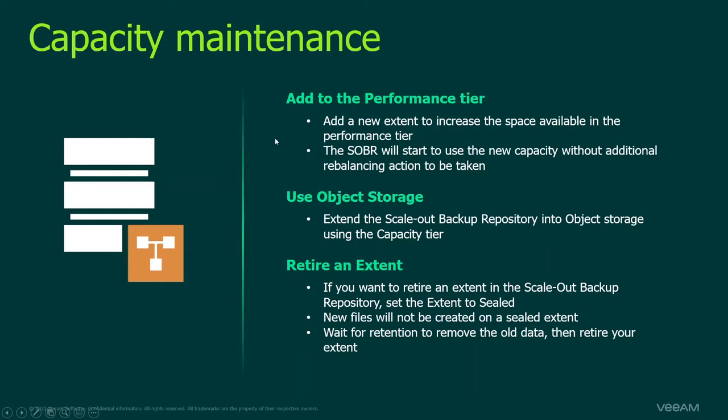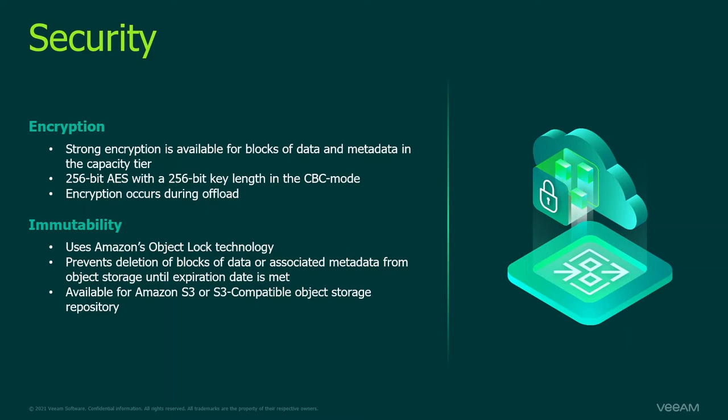We use a lot of security here. Please use encryption for all offloads to public cloud. For immutability, when we do a backup to S3 or S3 compatible repositories we can leverage Amazon's object lock technology. We write data there and give it a flag that it's immutable — so it can't be modified or deleted — ensuring you can always restore from object storage in case of ransomware.